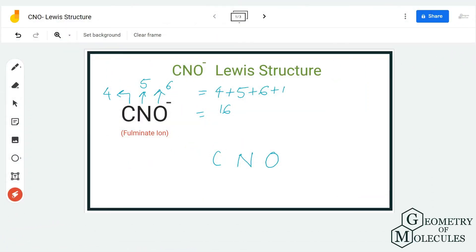Hi guys, welcome back to our channel. In today's video we are going to look at the CNO minus Lewis structure, in which we are looking at the Lewis structure which has nitrogen in the central position. If you want to look at the cyanide Lewis structure, let us know in the comment section below.